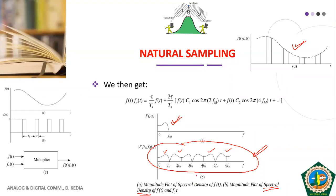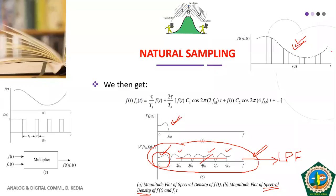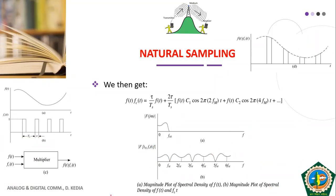To demodulate and recover the original modulating signal, we simply pass the PAM signal through a low-pass filter with cutoff frequency equal to FM. Everything above FM is removed and the original modulating signal is recovered. This is the beauty of frequency domain visualization — from the time domain PAM signal alone we could not easily determine how to demodulate, but the frequency domain representation makes it clear.